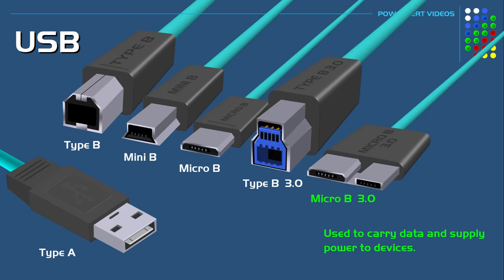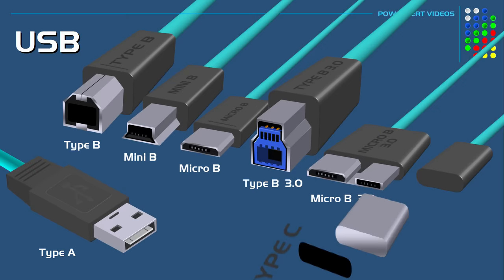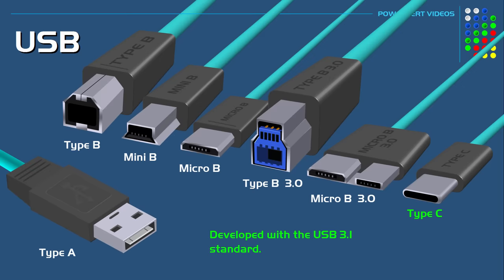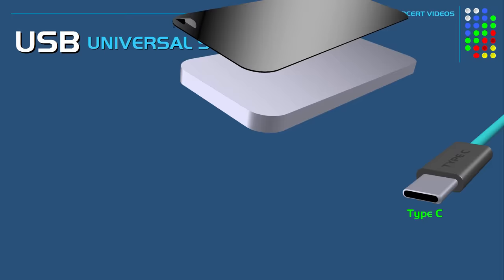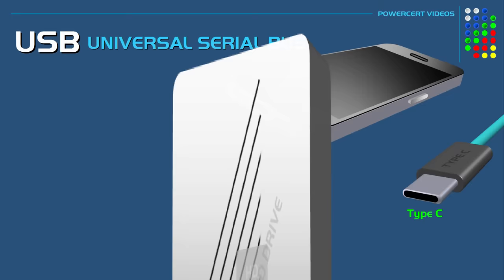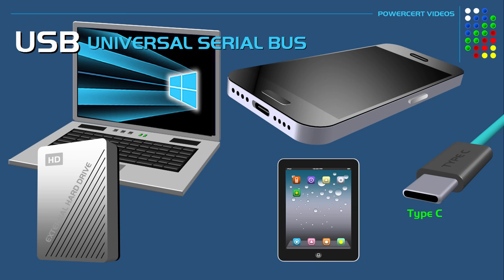In 2014, USB-C was developed with the USB 3.1 standard. This is a thin connector with rounded edges and it has 24 pins. It easily plugs into a port because it doesn't have an up and down orientation. Today the USB-C can be found on modern smartphones, external hard drives, tablets, and modern desktop and laptop computers. In fact, it's even used to charge larger devices such as modern laptops.